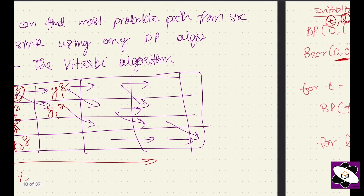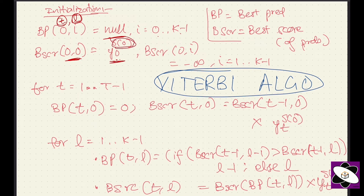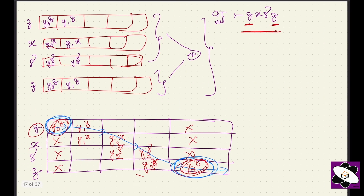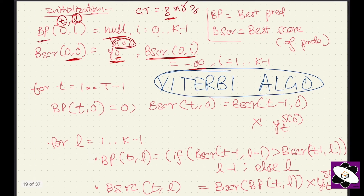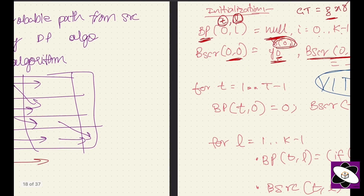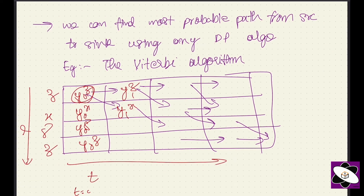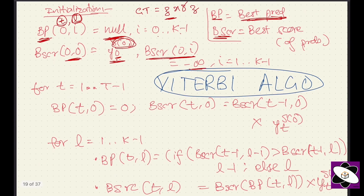We reinitialize cell (0, 0) to y_0 of s(0), which in our case is z at timestamp 0. All other cells at t=0 are set to minus infinity (the blocked/cross cells). bp is best prediction — it stores the symbol letter so we can backtrack the sequence later. b_source is the best score used in the algorithm.